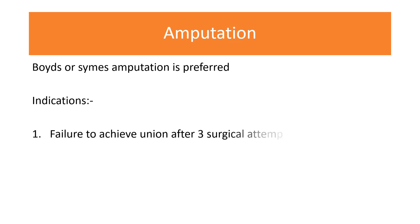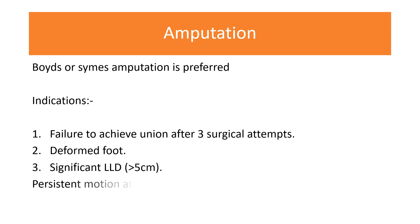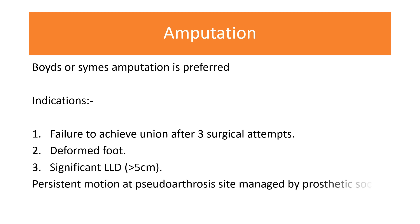Amputation is another surgical option for congenital pseudarthrosis of the tibia. Below-knee amputation is usually not indicated; instead, amputation through the ankle — Boyd's or Syme's amputation — is preferred. It is indicated in failure to achieve union after three or four surgical attempts, when deformity of the foot is present, or when there is significant leg length discrepancy of more than five centimeters.